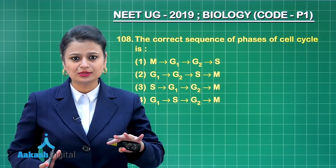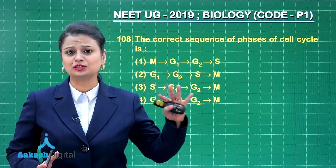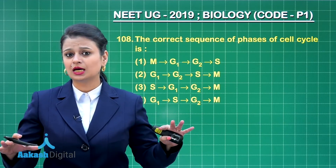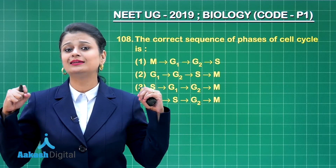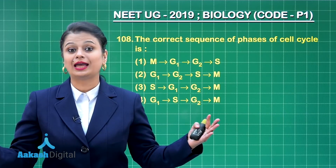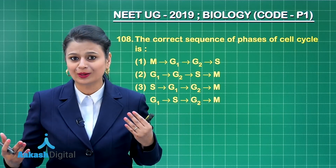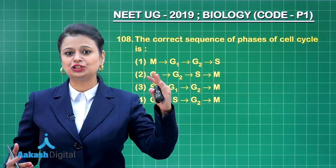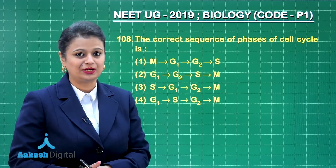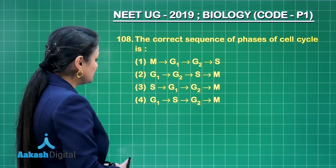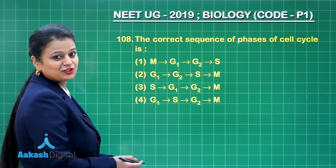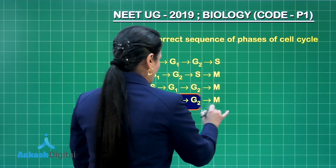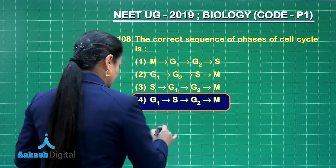Interphase is further divided into three phases: G1, S, and G2. Once all preparation is done, the cell is ready to enter M phase. So the correct sequence is G1, S, G2, and then M phase. Looking at the options, the fourth option matches this sequence, so that is our right answer.